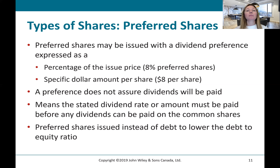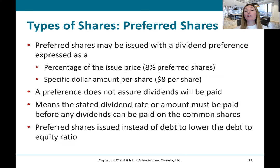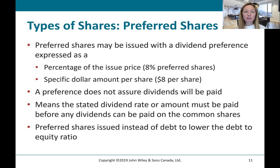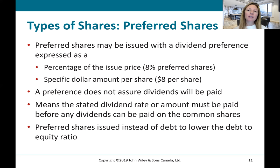Preferred shares may be issued with a dividend preference expressed as a percentage of the issue price — for instance, 8% preferred shares — or they can have a specific dollar amount per share, say $8 per share. It's important to note that this preference does not assure dividends will be paid, and there's no liability until the dividends are declared by the board of directors. But it does mean these dividends have to be paid before any dividends can be paid on common shares. Some companies specifically structure their equity issuance to manage their debt-to-equity ratio, ensuring shares meet the equity criteria for accounting rather than being classified as debt.